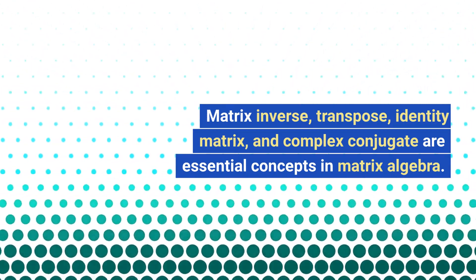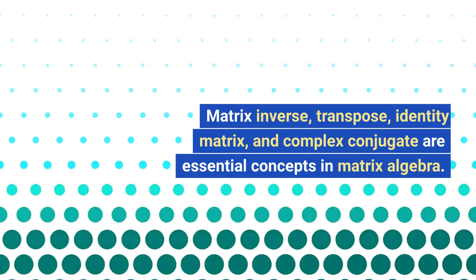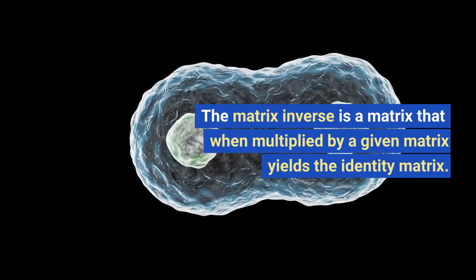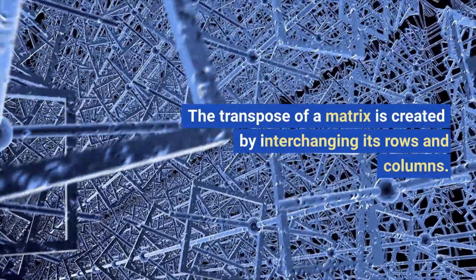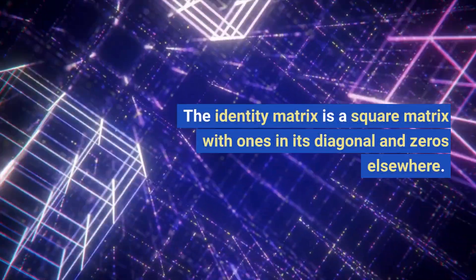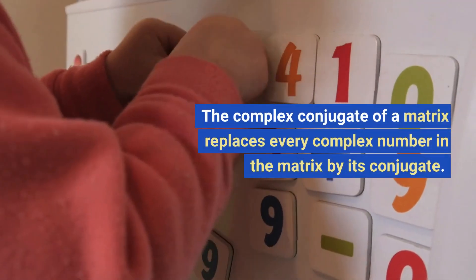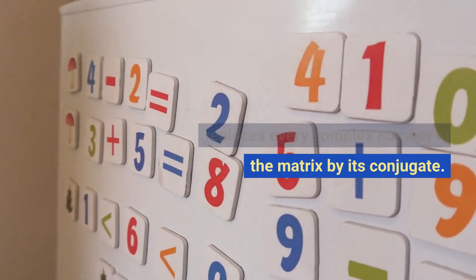Matrix inverse, transpose, identity matrix, and complex conjugate are essential concepts in matrix algebra. The matrix inverse is a matrix that when multiplied by a given matrix yields the identity matrix. The transpose of a matrix is created by interchanging its rows and columns. The identity matrix is a square matrix with ones in its diagonal and zeros elsewhere.